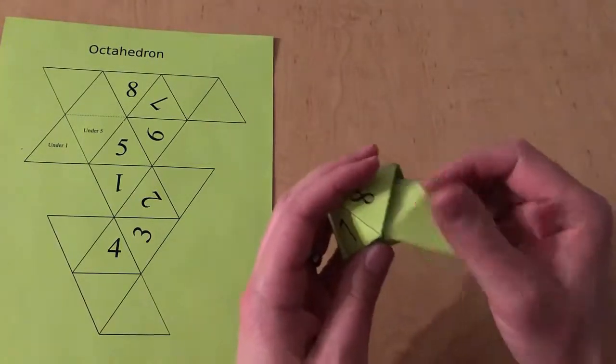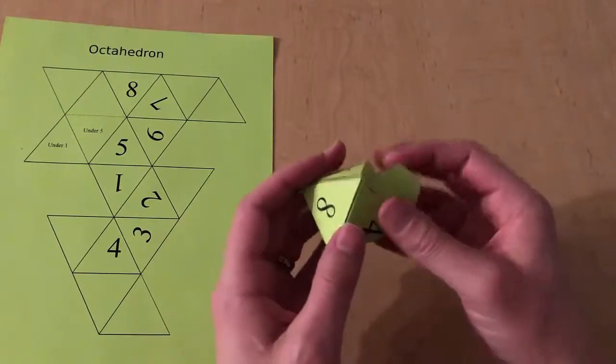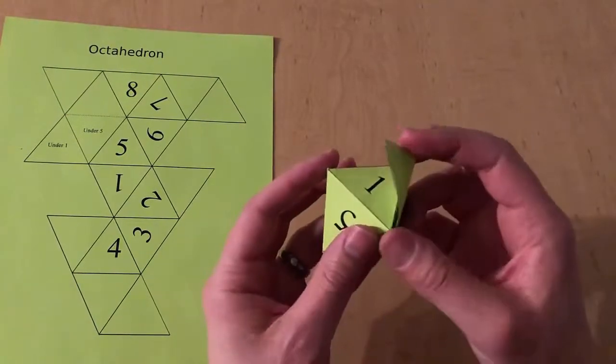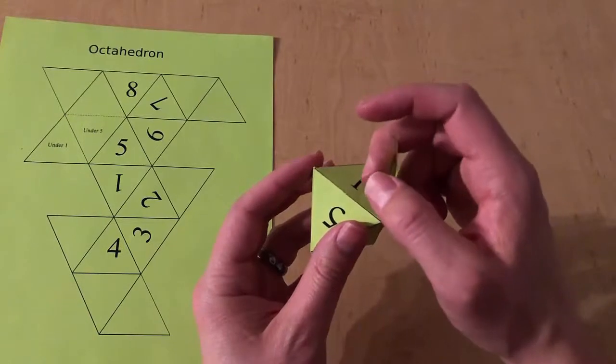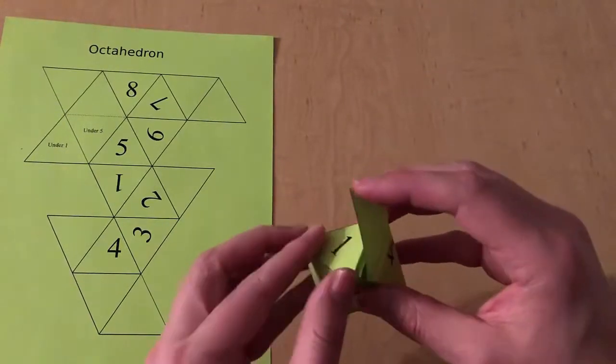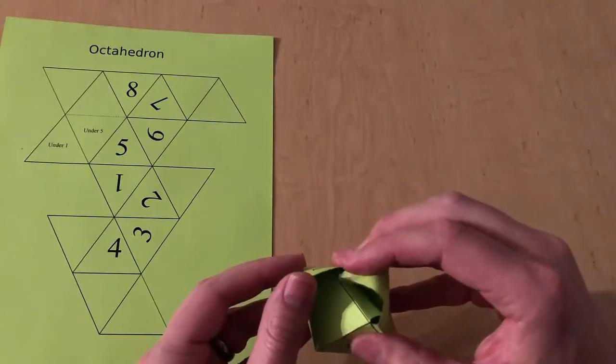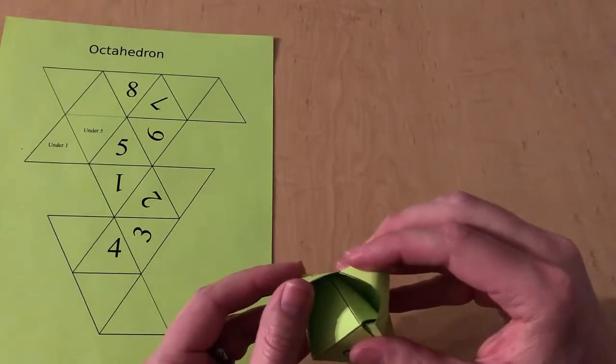I'm gonna first insert the two triangles and then the last tab. There's a nice pocket with the ones we folded under, under one here. So it's a little tricky to insert this final side.